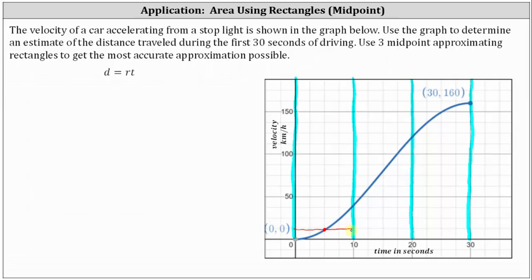Let's go ahead and sketch it. The midpoint of the next subinterval is when the time is 15 seconds. At 15 seconds, we go up to the function, which determines the height of the second midpoint rectangle. Then we find the midpoint in the last subinterval, which is when the time is 25 seconds, and we go up to the function to determine the height of the third midpoint rectangle.